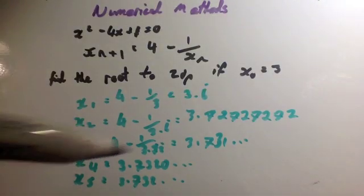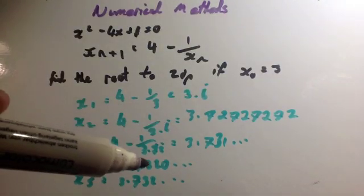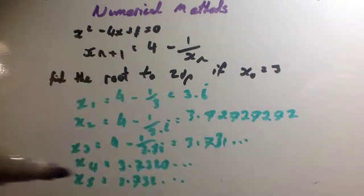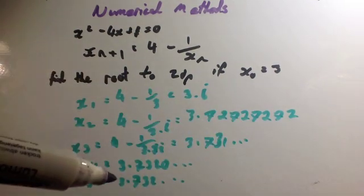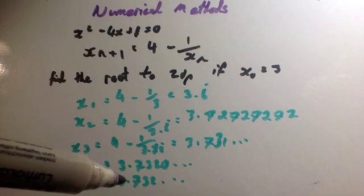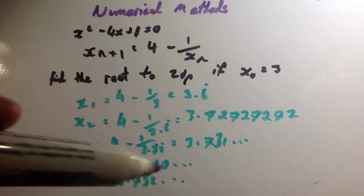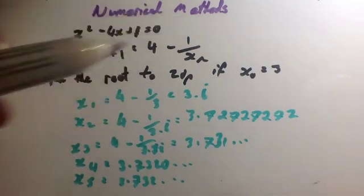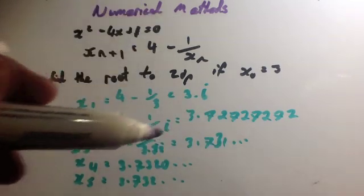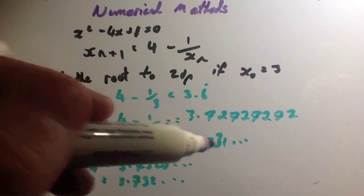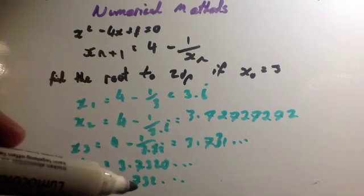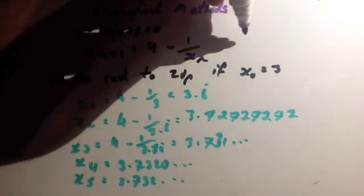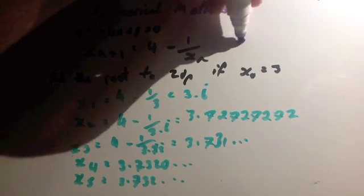And then x4, I worked that out to be 3.7320, etc. It goes on. X5, again it's the same, 3.7320, and it goes on. And to two decimal places, as you can see here we've got 3.73, 3.73, 3.73, and then that means the solution to two decimal places would be 3.73.